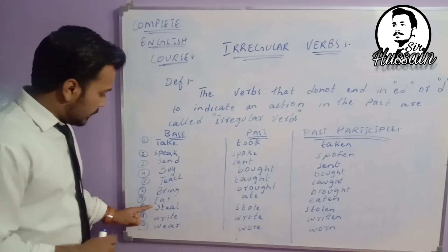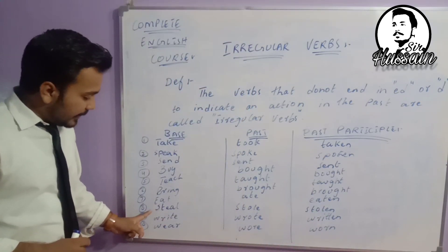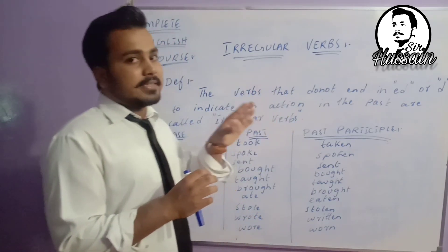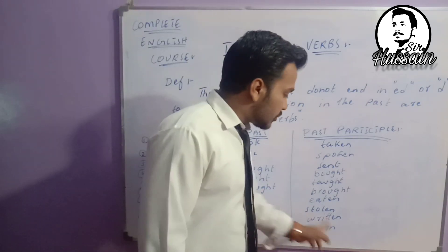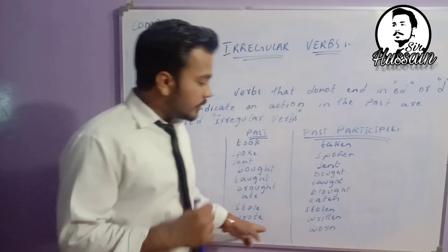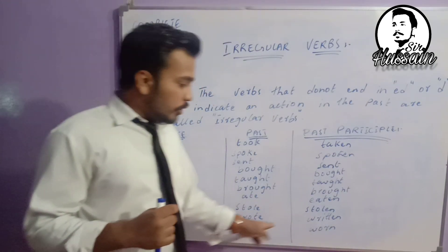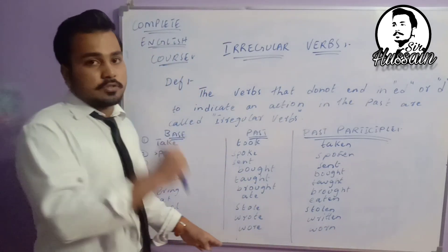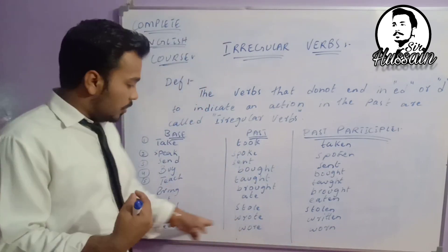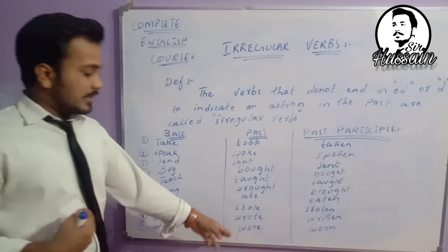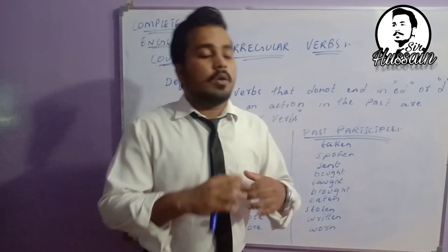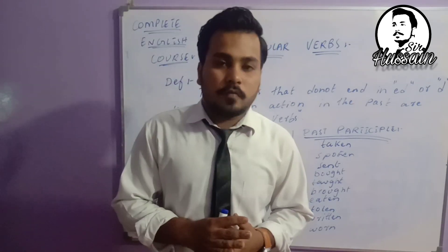Eat, ate, eaten. Number eight: 'steal', meaning to take without permission — second form is 'stole', third form is 'stolen'. 'Ed' and 'd' are not coming so it is irregular. Number nine: 'write' — wrote, written. Number ten: 'wear' — wore, worn. These are all irregular verbs because 'ed' is not used in the past forms.